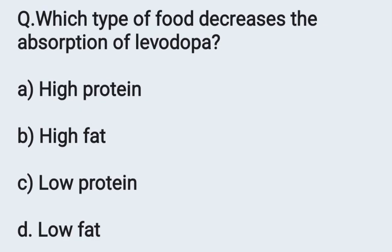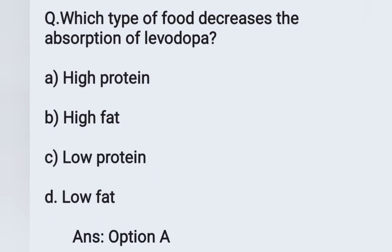Next question: Which type of food decreases the absorption of levodopa? Option A: high protein, option B: high fat, option C: low protein, option D: low fat. Levodopa is the drug of choice for Parkinson's disease and is a precursor of dopamine. A high protein diet decreases the absorption of levodopa. Option A is the correct answer.